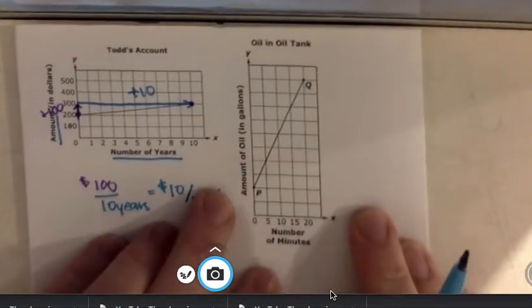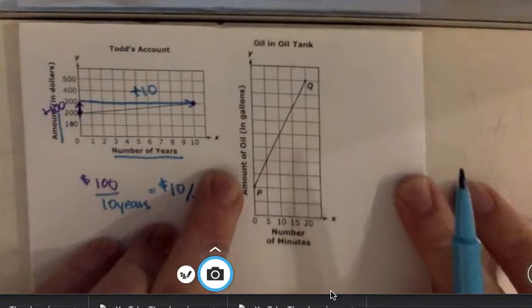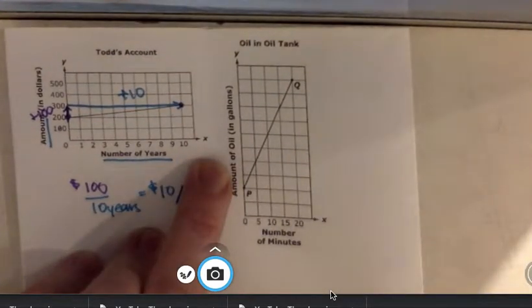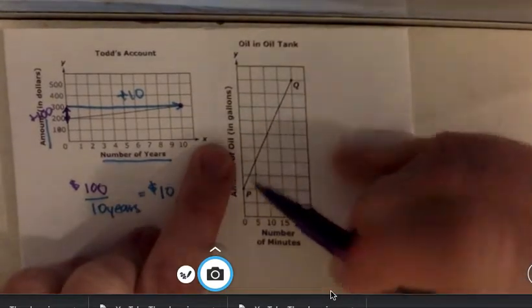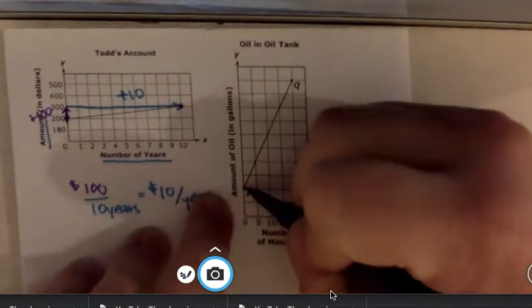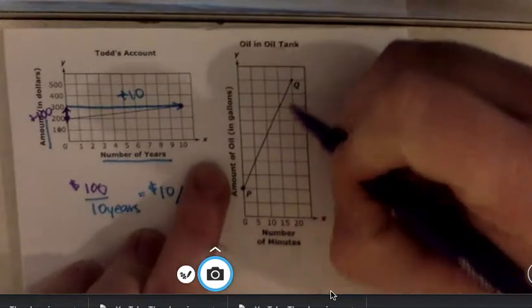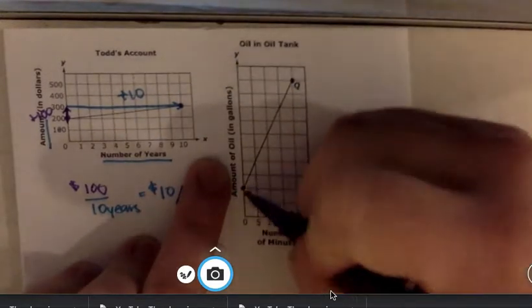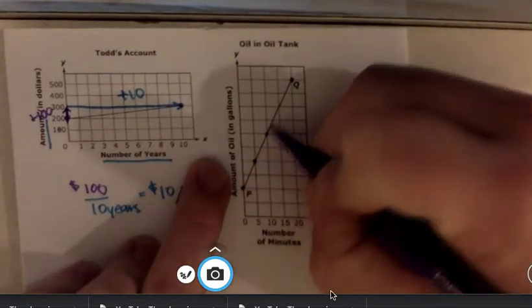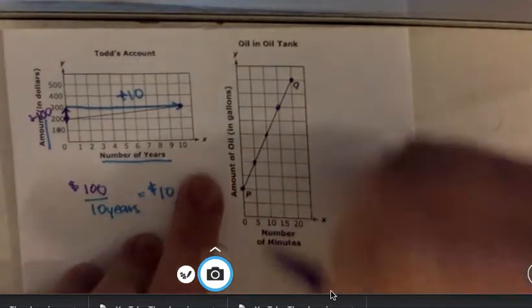This next one, oil in an oil tank. We have another situation where it's not starting at 0-0. Here's one nice point, and here's another nice point, and there's other nice points as we go along the way, technically, that we can all look at.